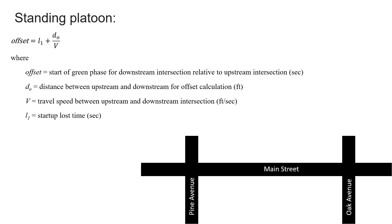For our standing platoon, we have a very similar equation. Now we're going to add that start-up loss time because the platoon is now not moving, so we need to take in consideration that start-up loss time. We were given that value of two seconds, so we're going to add that to our equation. So now it's two seconds plus our distance divided by the travel speed, which is going to give us 14.12 seconds.